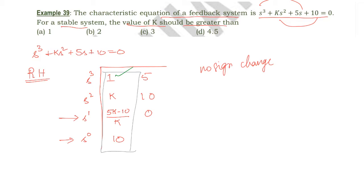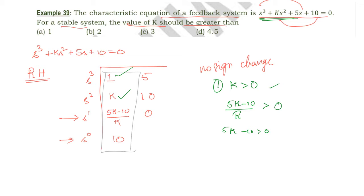For the system to be stable, there should be no sign change in the elements of the first column. So 1 is positive. K should be greater than 0 — in fact if k is not greater than 0 the system will be unstable because k is a coefficient of s², so all coefficients must be positive. The second condition: (5k − 10)/k should also be greater than 0, which means 5k − 10 > 0 since k > 0, giving k > 2. So for a stable system, the value of k should be greater than 2.